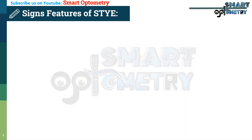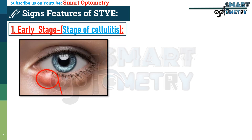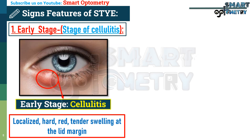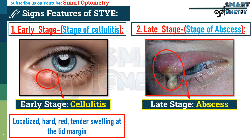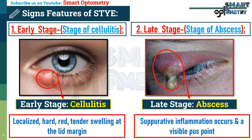The signs of a stye can be divided into two stages. In the early stage — the stage of cellulitis — there is localized, hard, red, tender swelling at the lid margin associated with marked edema. In the late stage — the stage of abscess formation — suppurative inflammation occurs and a visible pus point on the lid margin appears.